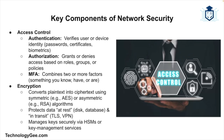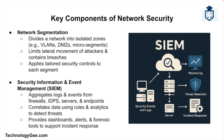You have encryption — encryption protects data by converting it into an unreadable format that can only be deciphered with the correct decryption key, ensuring the confidentiality and integrity of data during transmission and storage. Next we have network segmentation, which involves dividing a network into smaller isolated segments to limit the spread of attacks and improve security.